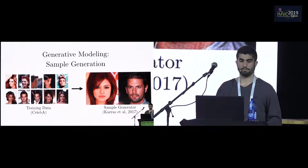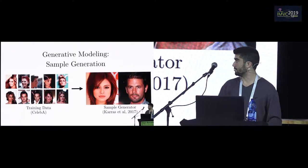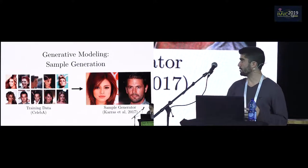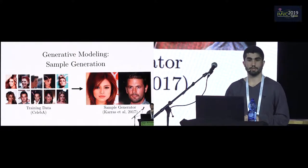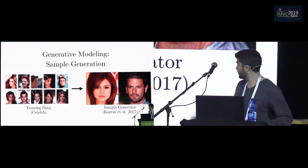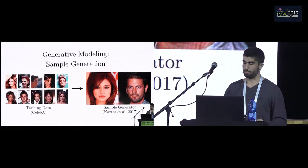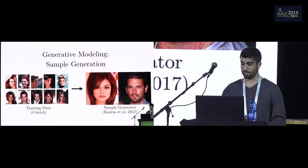Another property of generative models, and particularly GANs — and that's where GANs are particularly good — is sample generation. On the left, you have some training data called CelebA, which is simply images of faces, and the property we want of our generator is to generate realistically-looking images which have never been seen before, not part of the training data. The model here is called Progressive GAN, and you can see that the images produced are very realistic with generative adversarial networks.